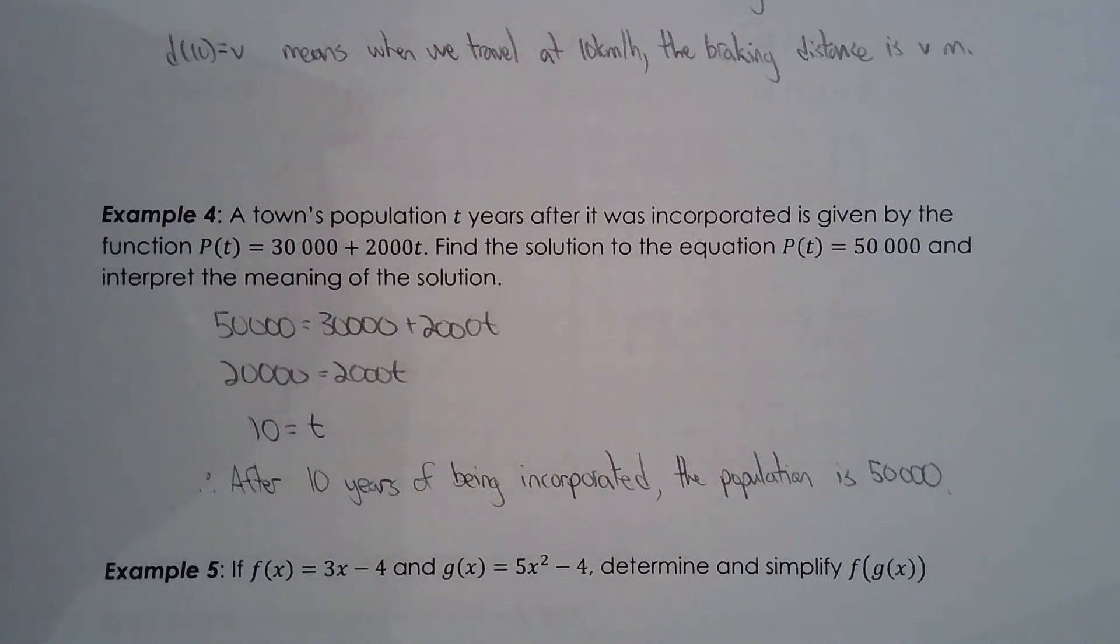When the input is 10, the output is 50,000, and since the output is the population and t is the time in years after it's incorporated, then that's the meaning.